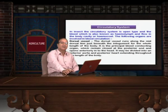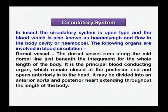Circulatory system in case of insect is open type. Open type means the blood, which is technically known as hemolymph, flows freely in the body cavity which is also known as hemocele. There are no tubes like the other higher animals where the blood flows in either arteries or veins. Here the system is open type, but in other animals it is closed type. The circulatory system consists of the following organs concerned with the circulation of the blood.